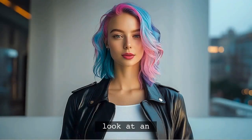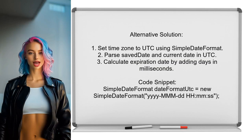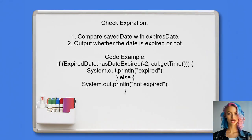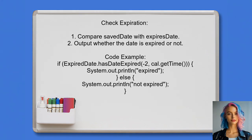Another approach involves using SimpleDateFormat to handle time zones. They set the time zone to UTC, ensuring all date and time calculations are consistent. The user checks if the saved date is before the calculated expiration date, demonstrating this with a code example showing how to determine if a date has expired based on the UTC time zone.